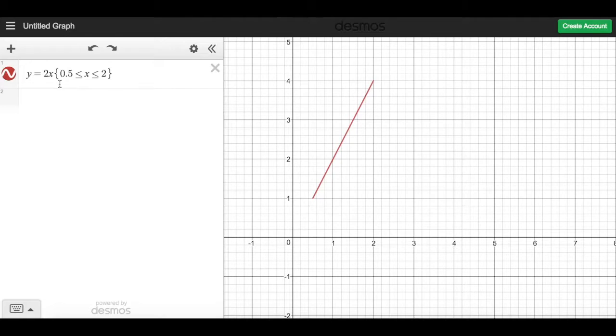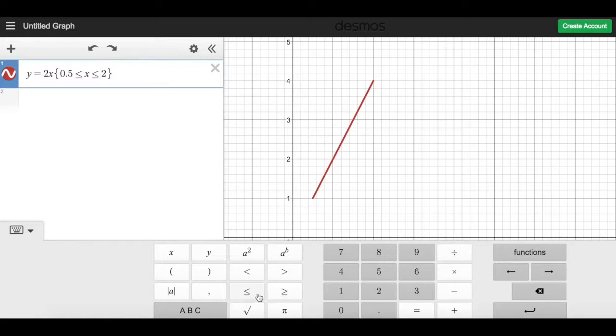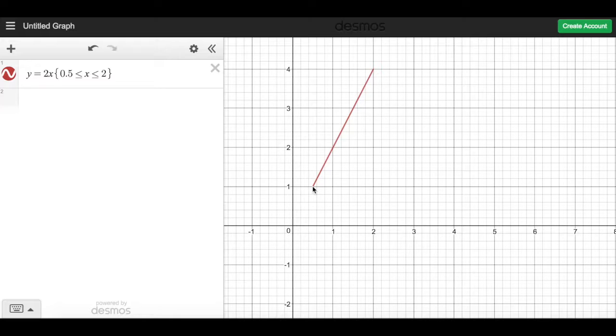So I'm going to restrict the domain here. And in Desmos, in order to do that, I open these sort of squiggly brackets. If I just open this keyboard in the bottom here, I can use these less than or equal to signs to specify the x values for which I want this line to be defined. I'm just arbitrarily picking 0.5 and 2, and I'm cutting it off there so that my line does not continue indefinitely.